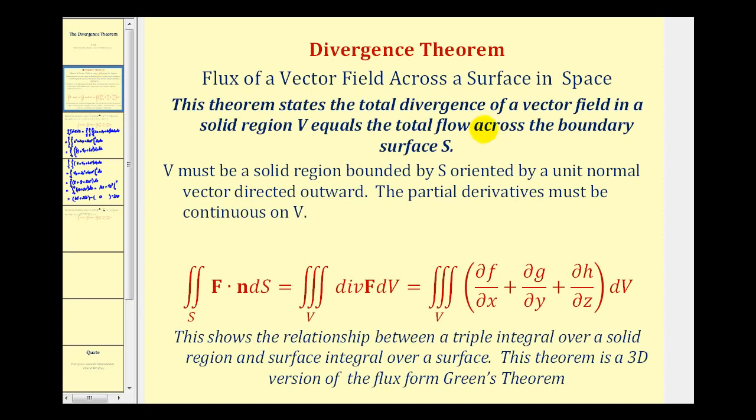The theorem states that the total divergence of a vector field in a solid region V is equal to the total flow across the boundary surface S.